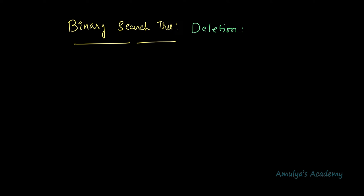Hello guys and welcome to Amulya's Academy YouTube channel. We were discussing binary search trees and in the previous tutorial we wrote a method for deletion operation — how to delete a given node from the BST. While performing deletion in a BST we need to be careful about three cases: deleting a node with zero children, one child, or two children. We wrote separate conditions for all three in the previous tutorial.